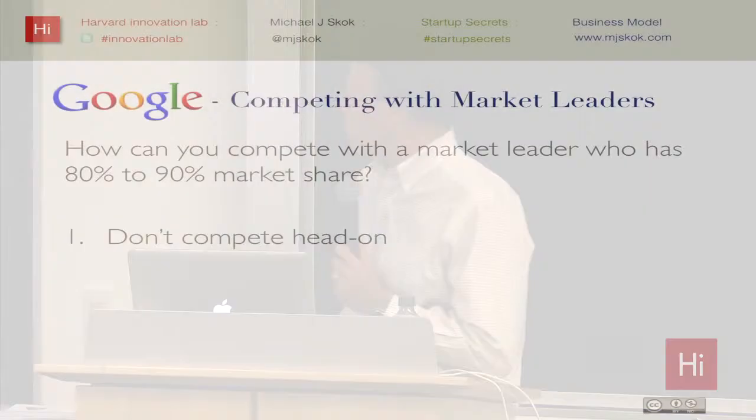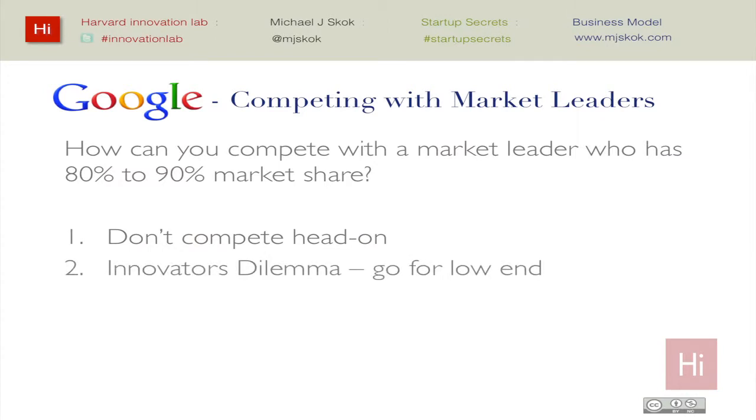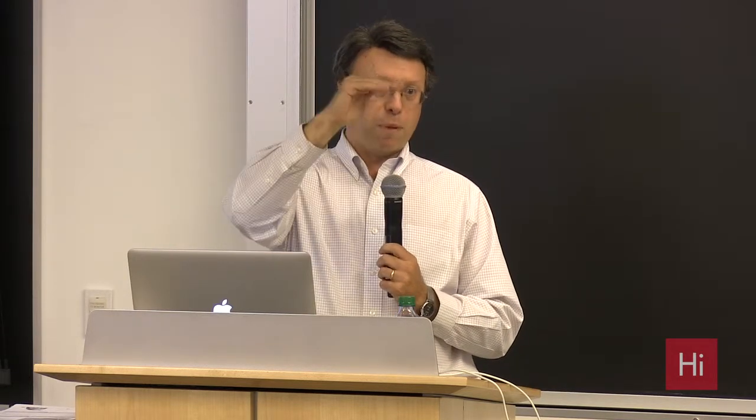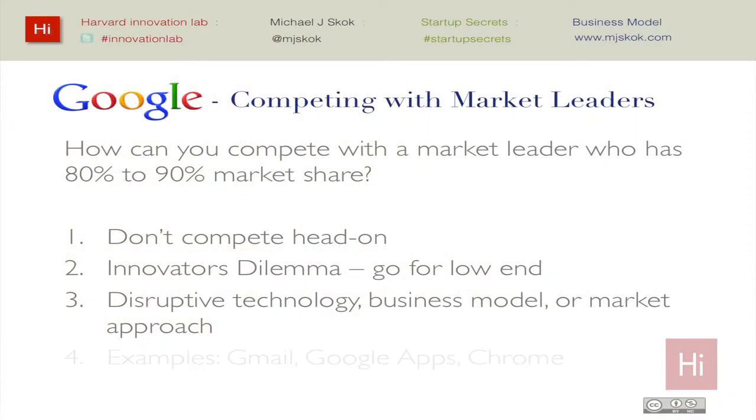The Innovator's Dilemma is the most fascinating business book I've ever read. Basically, it looks at why large companies fail to adopt innovation — why do tiny little startups come in and disrupt big companies? One of the key points is: start at the low end. Be disruptive in technology, market position, and business model. Go for the low end, because the big companies with big market share are going to move up-scale — they'll try to be a more expensive, higher-margin product and ignore the low end.